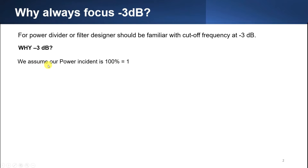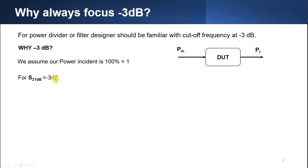We assume that our power incident is 100%, equal to 1 when we divide with 100. Let's say we have our S21dB equal to negative 3dB for our filter. That means power goes in, passes through the filter, and we have S21. So we talk about why S21 is negative 3dB.